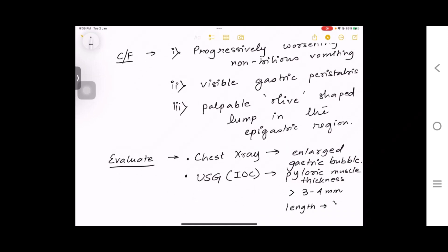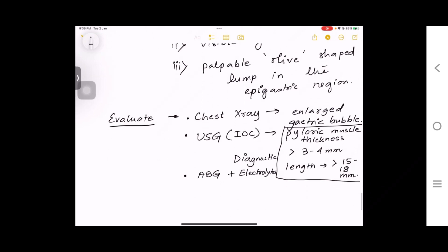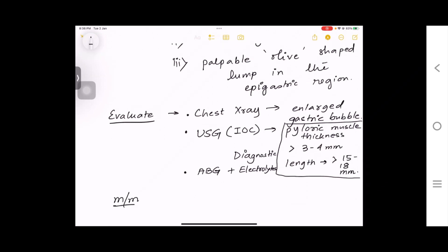Now how will you evaluate this condition? First you can do a chest x-ray to see that there is an enlarged gastric bubble. You can do USG which is also the investigation of choice. Here the pyloric muscle thickness can be seen which should be more than 3 to 4 millimeters to be categorized as this disease, and the length should be more than 15 to 18 millimeters. Third, you can also do ABG plus electrolytes because there is metabolic derailment.